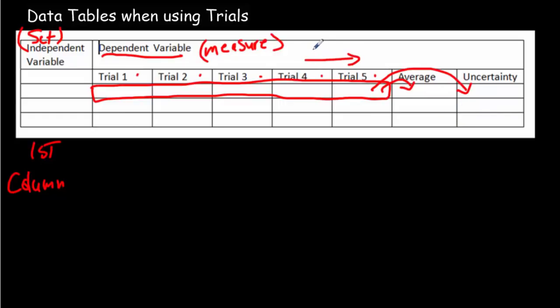Now, as we go across here, these are called trials. As we change the independent variable, as we go from here to here and here to here, changing that independent variable, we call those increments. Often I'll have students called changes in the independent variable trials. They're increments, and the different measured values are the trials.